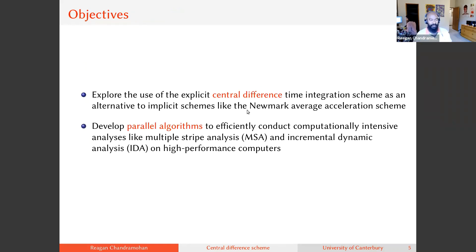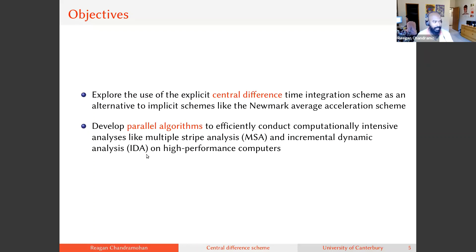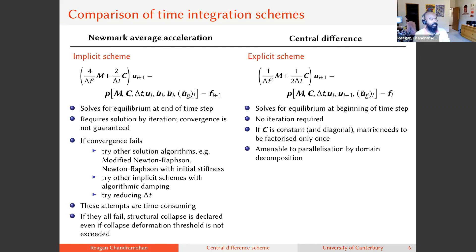When I encountered a lot of non-convergence during my PhD, with advice from Frank McKenna and others, I tried using the central difference time integration scheme — an explicit scheme rather than an implicit one. Since it is explicit, it does not require iteration and therefore completely eliminates the problem of numerical non-convergence. There are a few other issues to pay attention to, but it does eliminate non-convergence. Additionally, conducting so many analyses in parallel required developing efficient parallel algorithms for supercomputers.